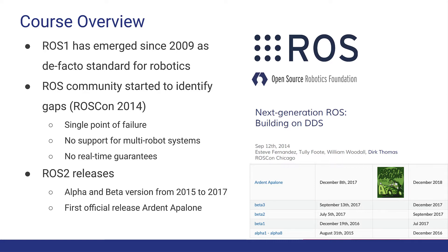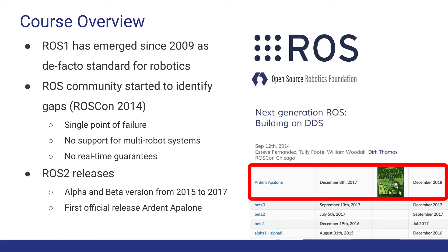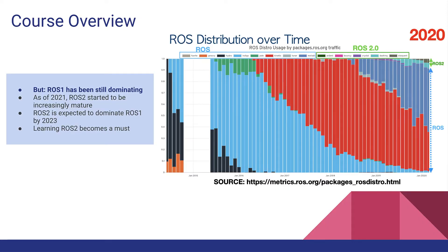Its reliability was therefore questionable. The ROS community formed several working groups to design and develop the next-generation version of ROS1, which is currently ROS2. Alpha and beta versions started to show up from August 2015 until September 2017, and the first official ROS2 release, known as Ardent Apollon, was launched on December 8, 2017.